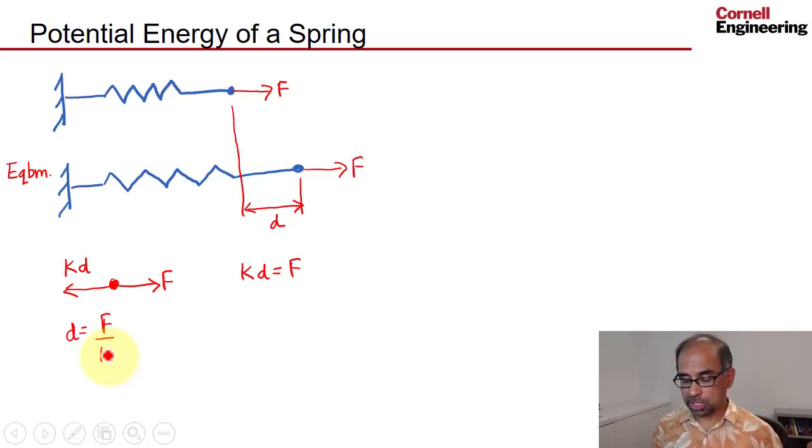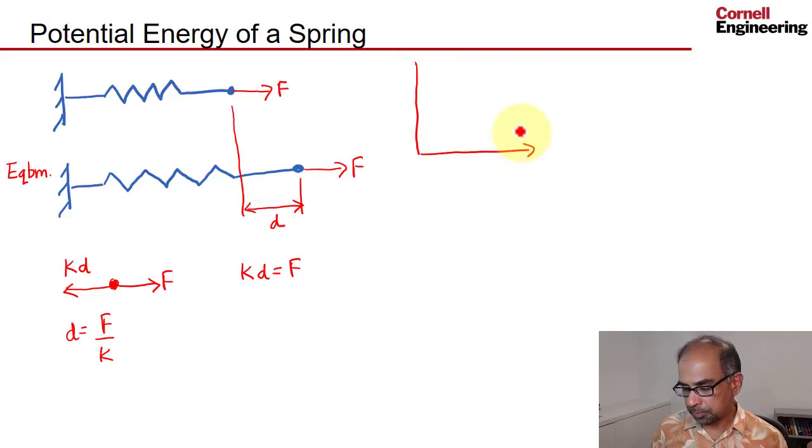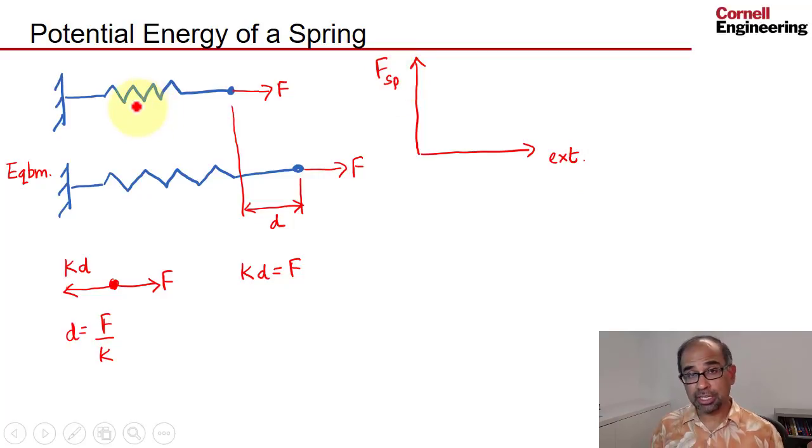We get the same answer if we use the potential energy approach. To see how that works, let me plot here. So I'll make a plot of the extension of the spring versus the force in the spring. Now initially, the spring doesn't have any extension, and so its force is zero.